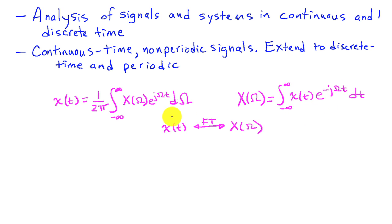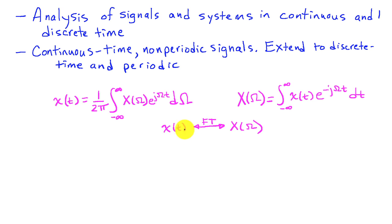So they are inverses, and it's a one-to-one relationship. We'll use the notation of a double arrow with an FT to denote Fourier transform, to indicate that these two signals are a Fourier transform pair.